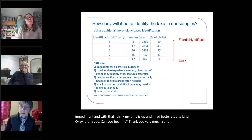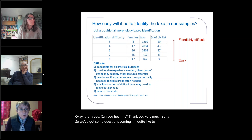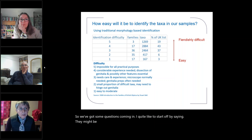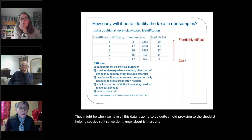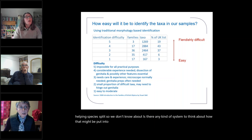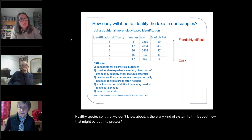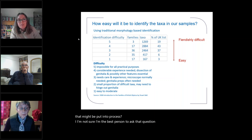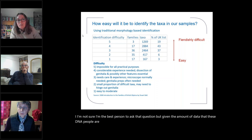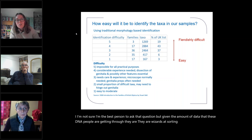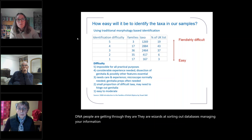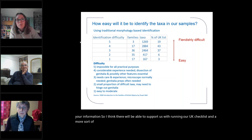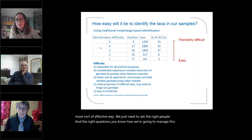So we've got some questions coming in. I'd quite like to start by saying — presumably when we have all this data, there's going to be quite a lot of revision to the checklist. There'll be species splits that we don't know about. Is there any kind of system to think about how that might be put into process? I'm not sure I'm the best person to ask that question, but given the amount of data that these DNA people are getting through, they are whizzes at sorting out databases and managing information. I think they'll be able to support us with running our UK checklist in a more effective way — we just need to ask the right people the right questions about how we're going to manage this information so that it's up to date and usable.